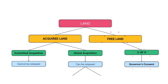What if someone buys a land that is acquired by the government? The first thing you need to find out is whether this land is committed or global. Committed acquisition means the government has handpicked these lands and reserved them for infrastructure development — for example, to build schools, hospitals, police stations, fire stations, roads, and so on. Anybody who buys such a land has lost their money.